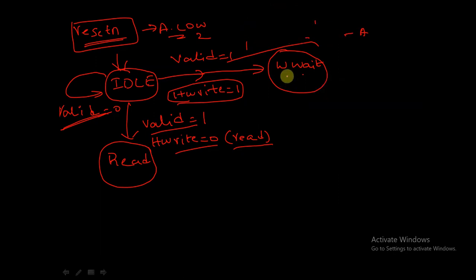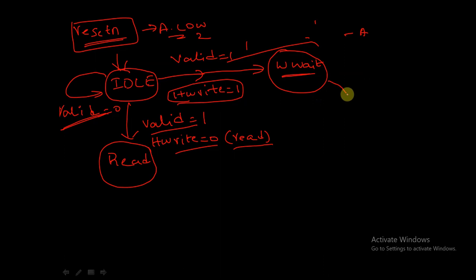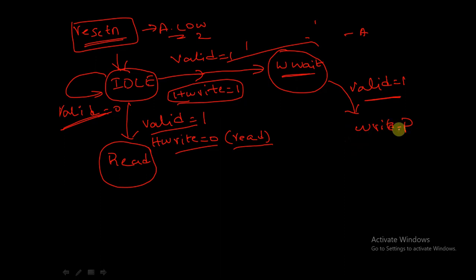In the WWRITE state, we are inserting an idle clock cycle so that the AHB side completes its write transfer due to the pipeline structure of AHB. From the WWRITE state, if VALID is equal to one - that is a valid transfer - then we are going into WRITE_P state. If VALID is equal to zero, then we are going into the WRITE state.